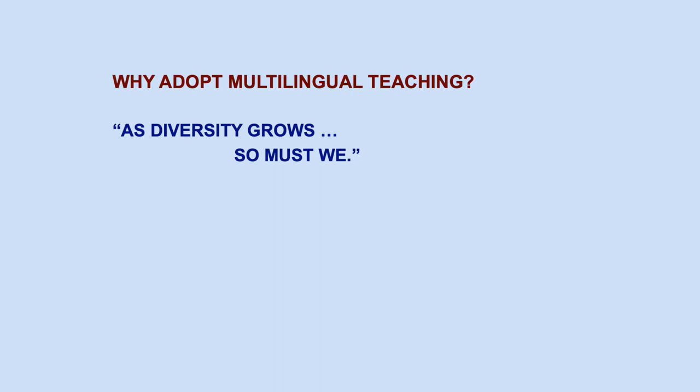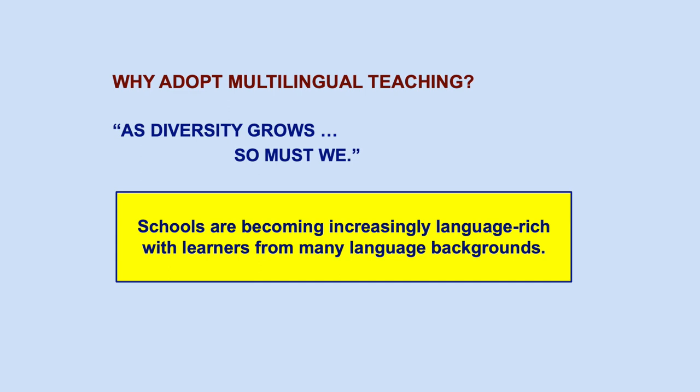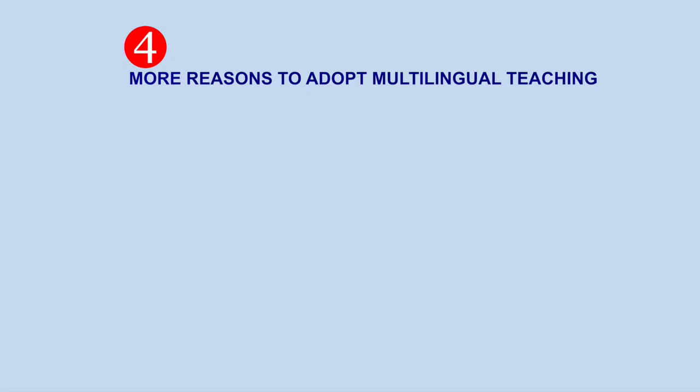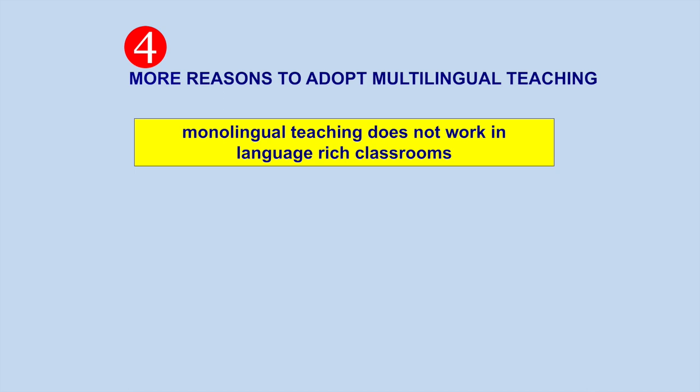Due to international migration, transnational population mobility, and globalization, school populations worldwide have changed. They are becoming increasingly language-rich with learners from many language backgrounds. According to the UNICEF document entitled Uprooted, 50 million children have left their homes since 2016. Many of these children enter child care centers and schools in their host country, significantly changing the population. Monolingual teaching does not work in language-rich classrooms. When everything happens in the school language, newcomers become disengaged and find it difficult to navigate their new environment, learn the school language, and participate in the curriculum.